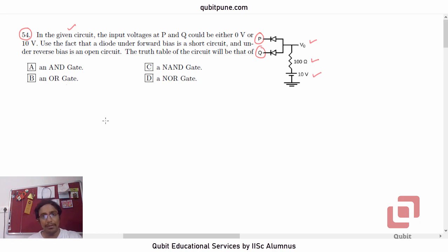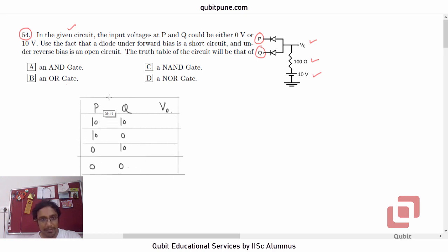So let's build the truth table now. P, Q, V0. Let's now write down all the four possibilities that we can have for P and Q. So we can have 10, 10, then 10, 0, then 0, 10, and 0, 0. So this is our truth table.